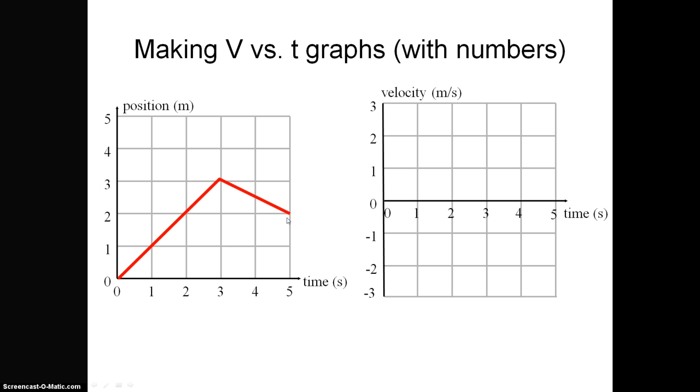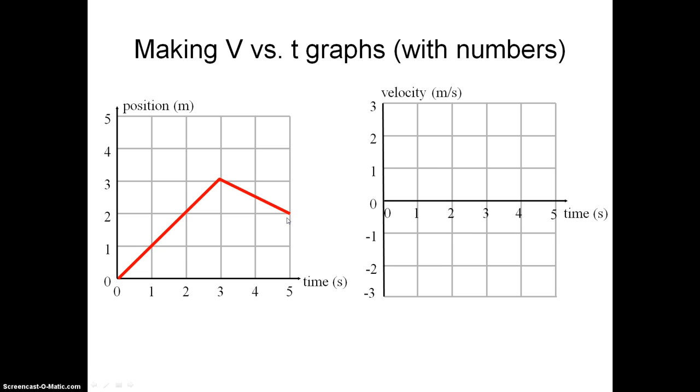So in order to make an accurate velocity versus time graph, we have to calculate the slope for each region. Remember, velocity can be found by calculating the slope of a position versus time graph, or an x versus t graph, and you do that by taking the displacement, the change in an object's position, divided by the change in time. So let's just call this first part of the motion motion A, and the second part motion B.